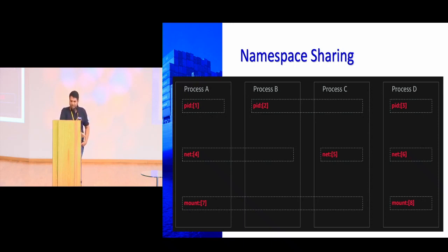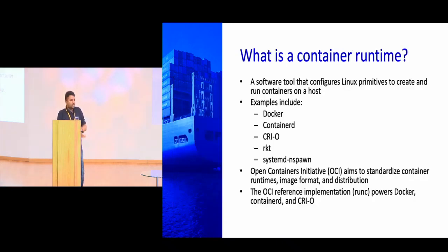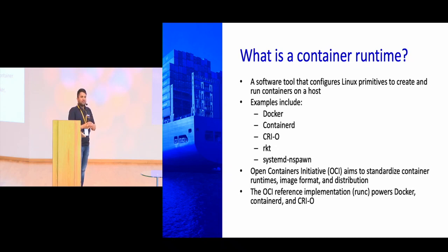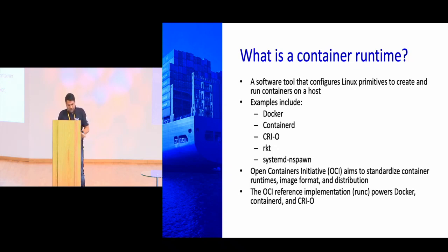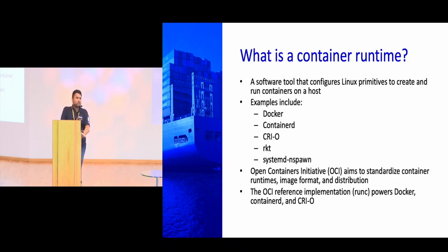Next: runtimes. What is a container runtime? A runtime is a program that helps execute namespaces and cgroups. When you say 'I want to start this container', the runtime is the part of the program that creates namespaces and cgroups for that process and runs it. Once the container exits, the namespaces and cgroups are destroyed. Examples of container runtimes: Docker, containerd, CRI-O (used by Kubernetes), RKT, and systemd-nspawn (almost deprecated). There's an organization called Open Container Initiative (OCI) which standardizes the set of instructions — what your runtime should implement to work with other counterparts.